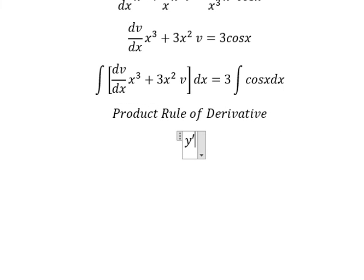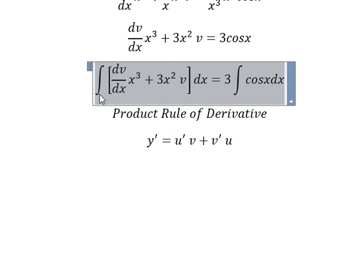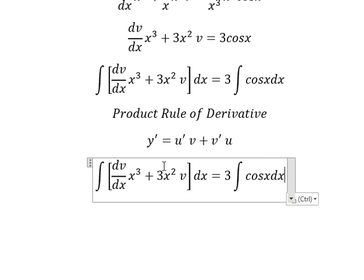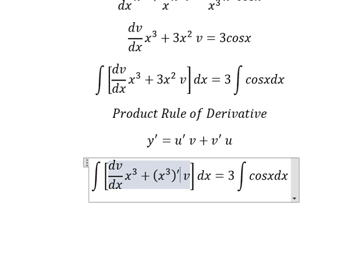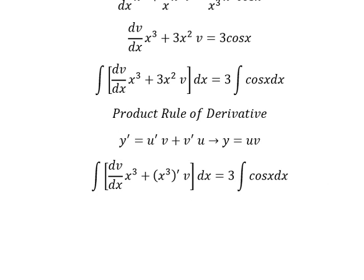Next, we apply the product rule of the derivative. So, the first derivative of y equals the first derivative of u multiplied by v, plus the first derivative of v multiplied by u. So this one is the first derivative of u multiplied by v, and this one is the first derivative of x to the power of 3. That's the first derivative of v with u. So if we do this integration, we have u times v, which gives us v times x to the power of 3.